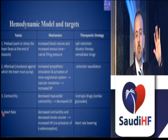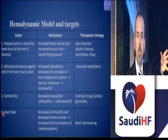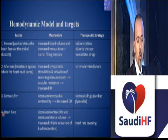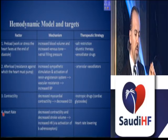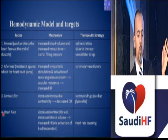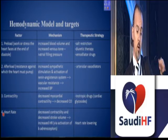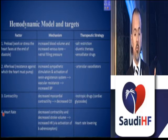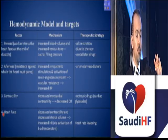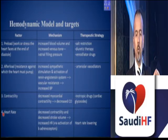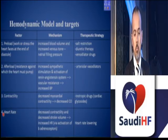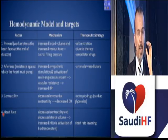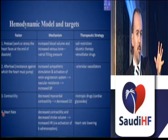When we speak about the hemodynamic model, we have explanations and targets. For preload — increased blood volume and increased venous tone — we fight with salt restriction and diuretic therapy, the oldest drugs we use currently. If there is a problem with the afterload, which is resistance against which the heart must pump, it is associated with increased sympathetic stimulation and activation of the renin-angiotensin axis. In the hemodynamic model, physicians thought that giving arterial vasodilators could fight against afterload.